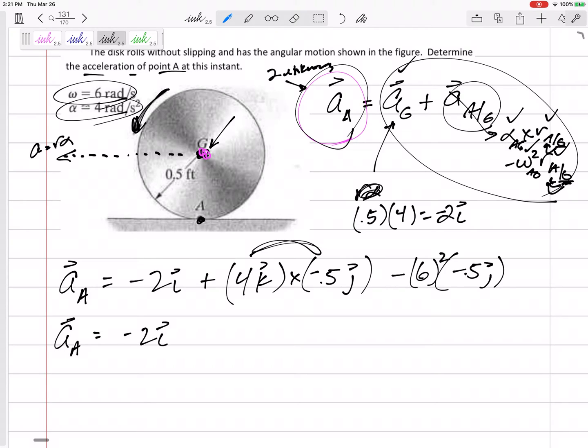All right, this right here, 4 times 0.5 would be 2. K crossed with J. I, J, K. Do this circle. If it goes alphabetically around in that direction, it's going to be positive. If it goes the other direction, it's negative. K crossed with J is negative I.